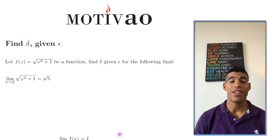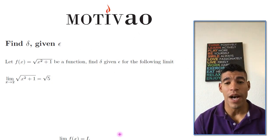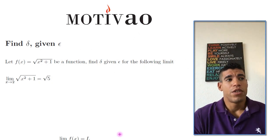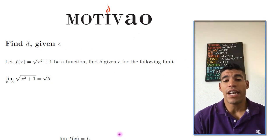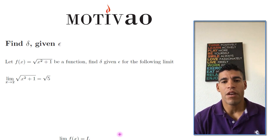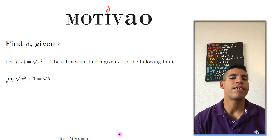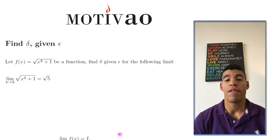How's it going, guys? It's Joshua again from Multivalve. Today we're going to find delta given epsilon for a specific example of a limit.